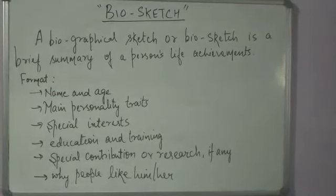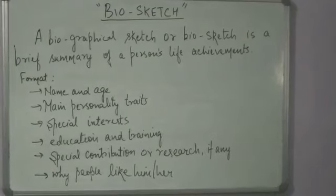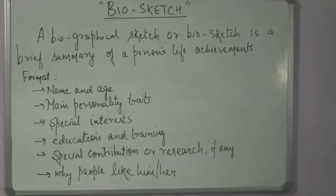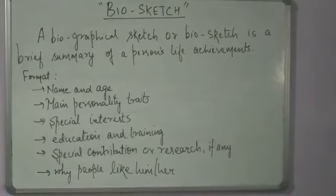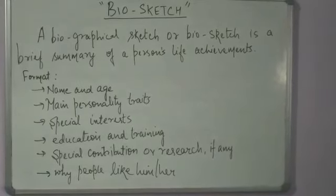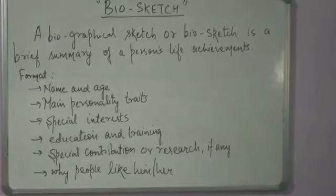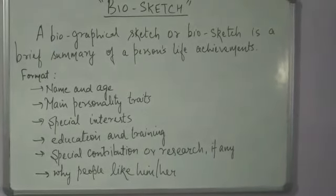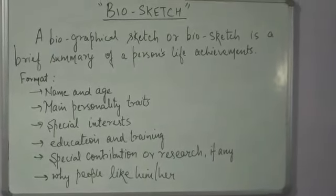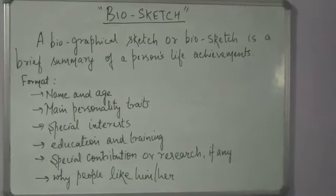The format that you are going to follow for writing the bio sketch is: you are going to write the name and age, then the main personality traits — that is characteristics — then the special interests, what are his or her special interests, and then you will be writing the education and training, meaning from where he or she has completed the training or education.